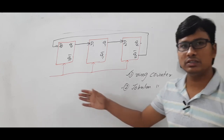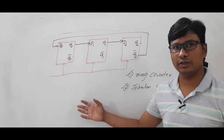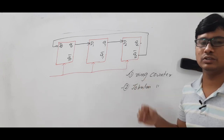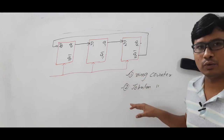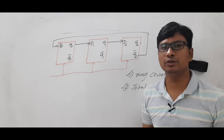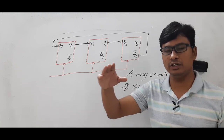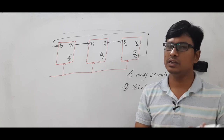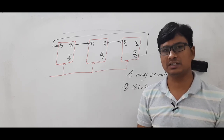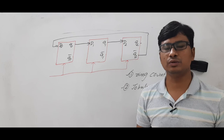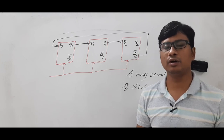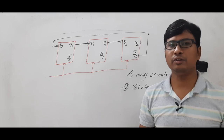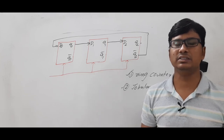I hope you have understood what a shift counter is and how it is classified into ring counters and Johnson counters. In the coming videos we will discuss examples related to ring counters and then Johnson counters, followed by asynchronous counters, which are also called ripple counters. Thank you for watching, have a nice day.